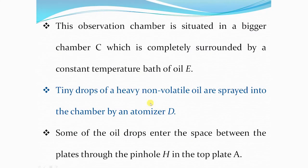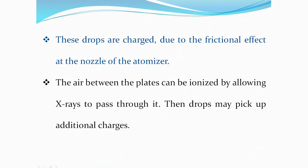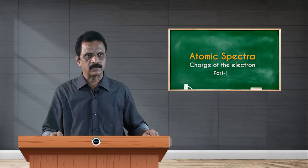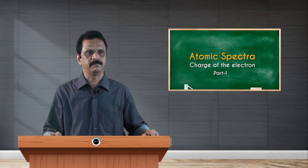Let us see the details of this apparatus. The observation chamber is situated in a bigger chamber C, which is completely surrounded by a constant temperature bath of oil E. The tiny droplets of heavy non-volatile oil are sprayed into the chamber by an atomizer D. Some of the oil drops enter the space between the plates through the pinhole E and are charged due to the frictional effect of the nozzle of the atomizer. The air between the plates can also be ionized by allowing X-rays to pass through it, and then the drops may pick up additional charges. The drops are illuminated by light from an arc lamp and observed by means of a short-focus telescope T provided with a millimeter scale in the eyepiece.